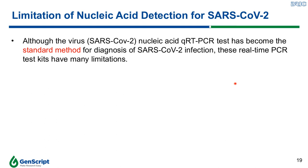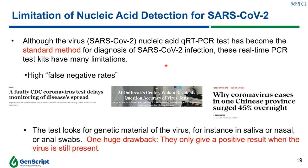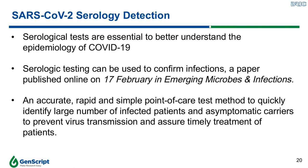Although the virus nucleic acid PCR test has become the standard method for diagnosis of SARS-CoV-2 infection, these real-time PCR test kits have limitations. First, high false negative rates have been reported recently. Second, this test only looks for the genetic materials of the virus in samples such as saliva or nasal swabs, and can only give a positive result when the virus is still present. That means these tests are unable to tell whether an individual has gone through infection, recovered, and cleared the virus. Therefore, researchers developed a serology-based detection assay to overcome this limitation.